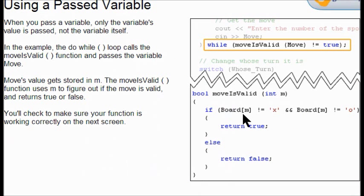The end of this do while loop calls the move is valid function and passes it into the variable moves value. The real power of passing a variable is you're passing the value of the variable, not the variable itself. So when we have the do while loop, it calls the move is valid function and passes the variable move. So the value gets stored in m. The move is valid function uses m to figure out if the move is valid. It's either true or false, right? And you'll check to make sure your function is working correctly.